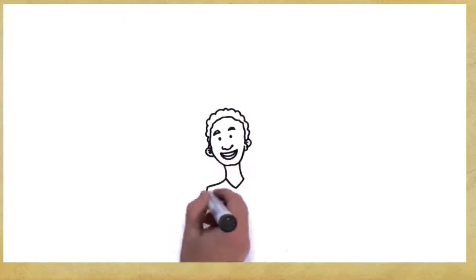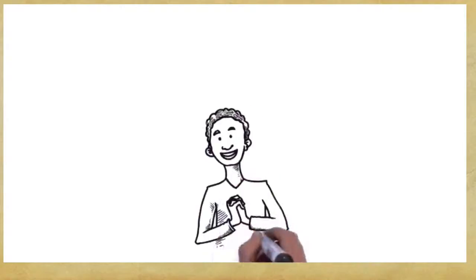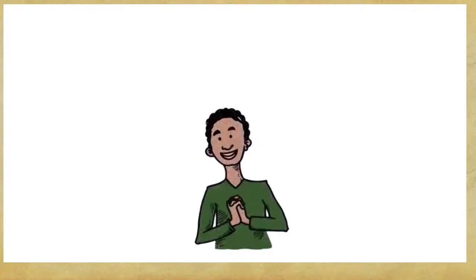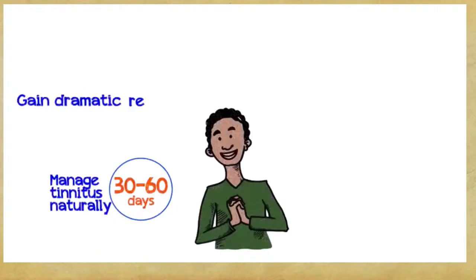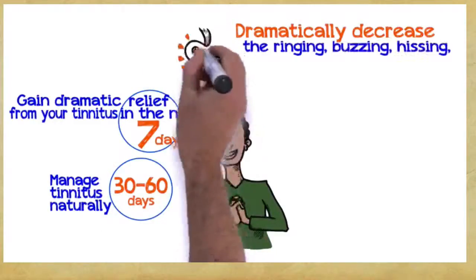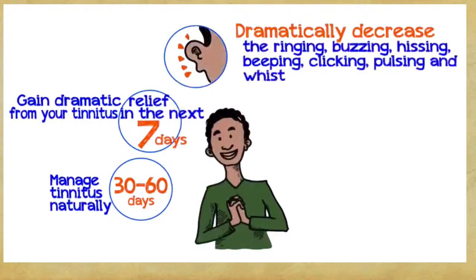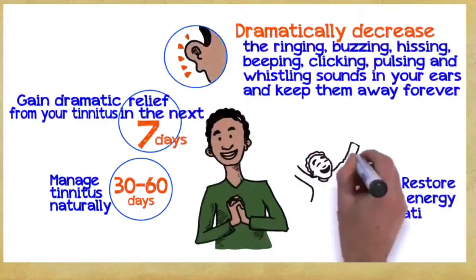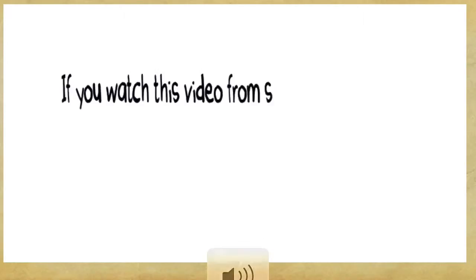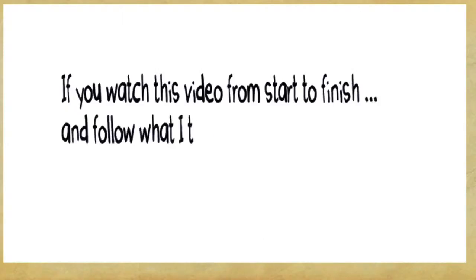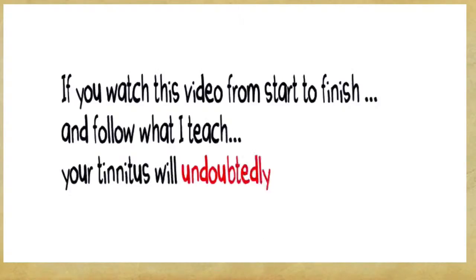So, what can you gain if you embrace these three easy principles? Well, you can manage tinnitus naturally within 30 to 60 days, gain dramatic relief from your tinnitus within the next seven days, dramatically decrease the ringing, buzzing, hissing, beeping, clicking, pulsing, and whistling sounds in your ears and keep them away forever. Restore your energy and dramatically improve the quality of your life, guaranteed. Let me reiterate, if you watch this video from start to finish and follow what I teach, your tinnitus will undoubtedly start to fade away.